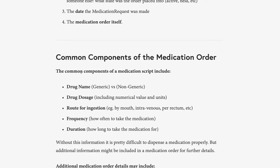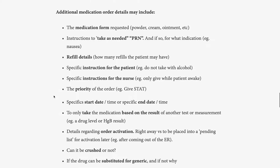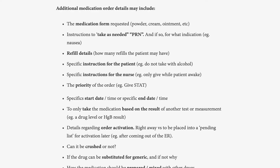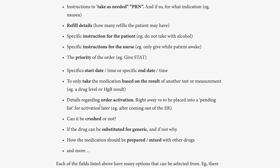Without this information it's pretty difficult to properly dispense a medication. But additional information may also need to be added to a medication order. This includes the medication form — whether it's a powder, a cream, or an ointment — whether the patient can take it PRN or as needed and if so what the indication is, such as for nausea. There might need to be details on how many refills the patient can have, specific instructions for the patient such as don't take with alcohol, or specific instructions for the nurse such as only give while the patient is awake. The order might have a priority such as give stat, a specific start date or end date, or specific details as far as what should activate it — such as the medication should only be taken based on the results of a particular drug level or a particular blood test.